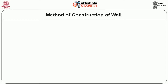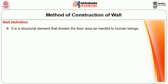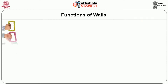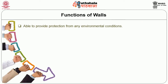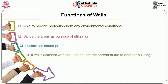Method of construction of wall — first let us see the definition of wall. A wall is a structural element that divides the floor area as needed by human beings. The functions of a wall include: providing protection from environmental conditions, dividing areas for purposes of utilization, performing as soundproofing, attenuating the spread of fire to another building, enhancing building aesthetics, and providing privacy.